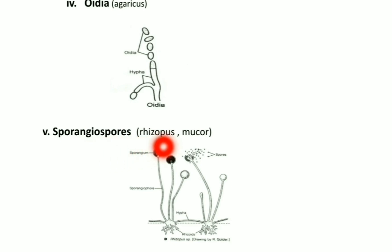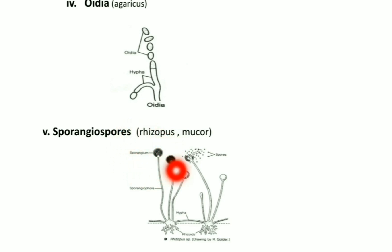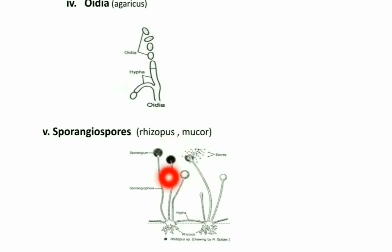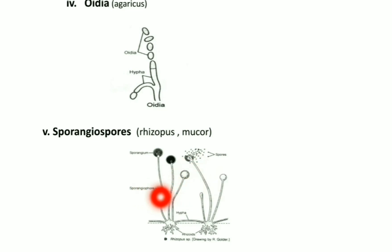Sporangiospores are endospores — non-motile spores produced inside sporangia, dispersed by wind. These are seen in Rhizopus and Mucor.